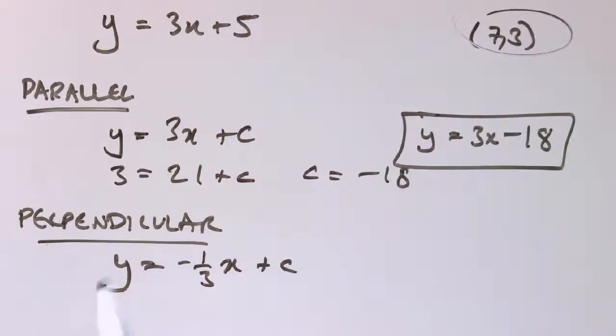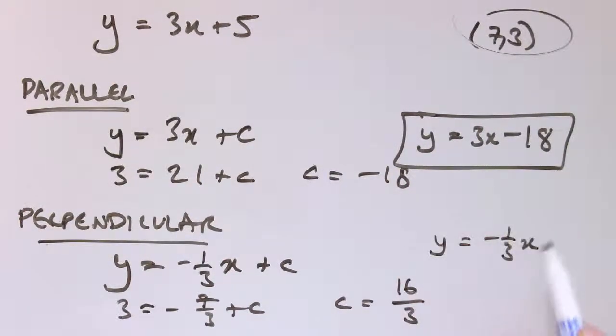And now when x equals 7, y equals 3, so I get 3 equals minus 7/3 plus c. So c is 3 plus 7/3, so that's 5 and a third, or 16 over 3. So the line would be y equals minus 1/3 x plus 16 over 3.